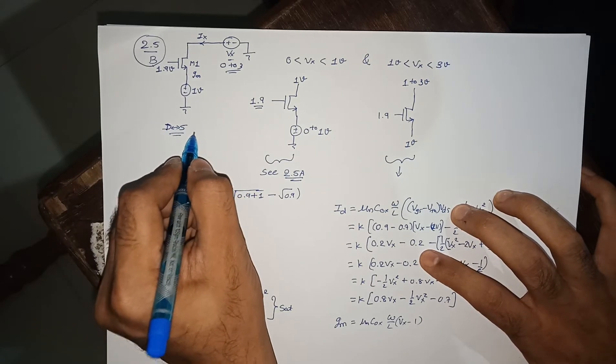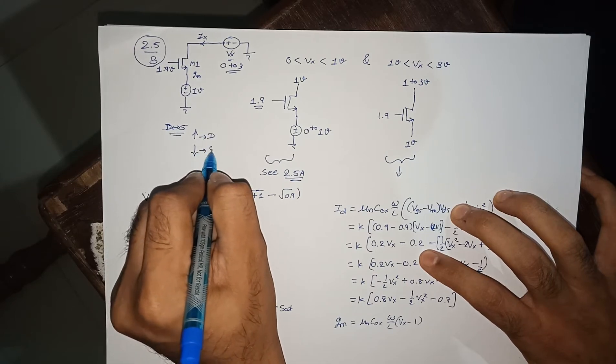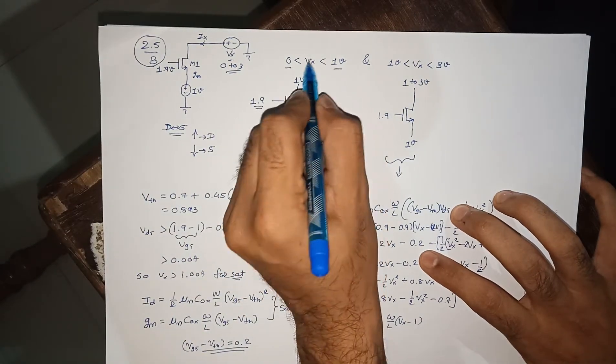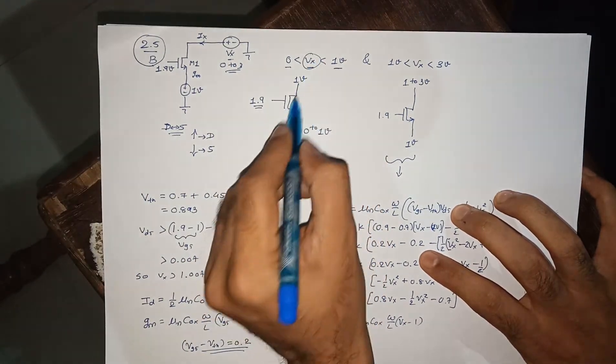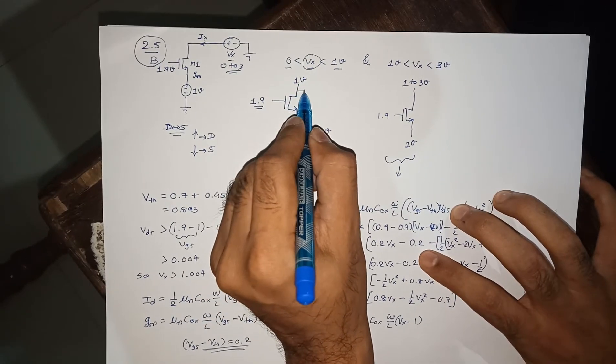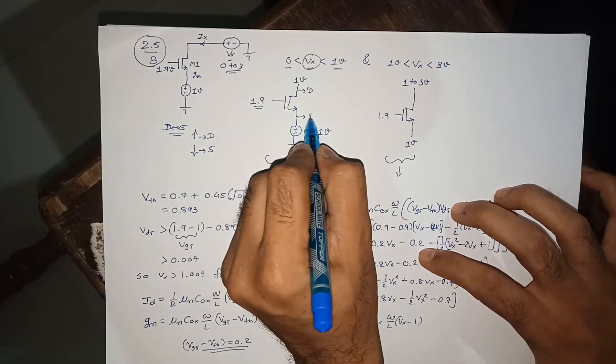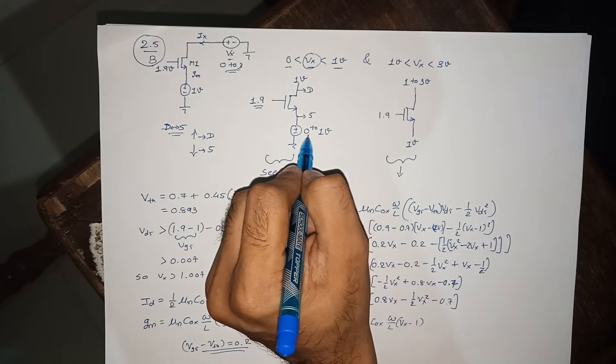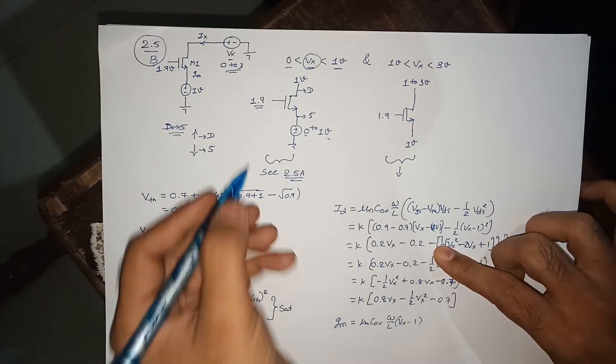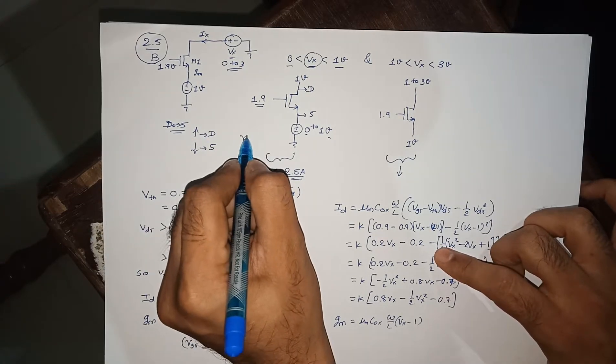From 0 to 1 volt of VX, your circuit will be like this: your 1 volt terminal will act as a drain, the variable VX terminal will act as a source. You are going from 0 to 1 volt, your gate is fixed to 1.9. For simplicity, you can neglect the body effect and the channel length modulation.